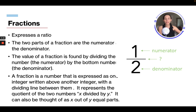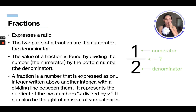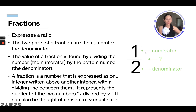A fraction represents the quotient of two numbers, so x divided by y. It can also be thought of as x out of y equal parts. So really all that's saying is that it represents one divided by two — one half — because one out of two is one half.